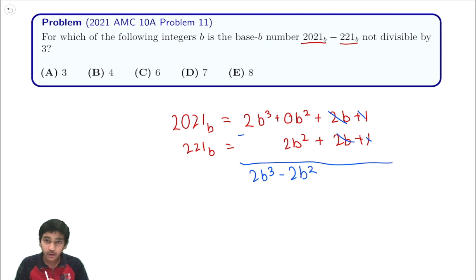We have to find when this is not divisible by 3. Well, the common thing to do is to factor this into 2 times b squared times b minus 1. From here, we need to find when this is not divisible by 3, which is actually a little bit hard to answer.